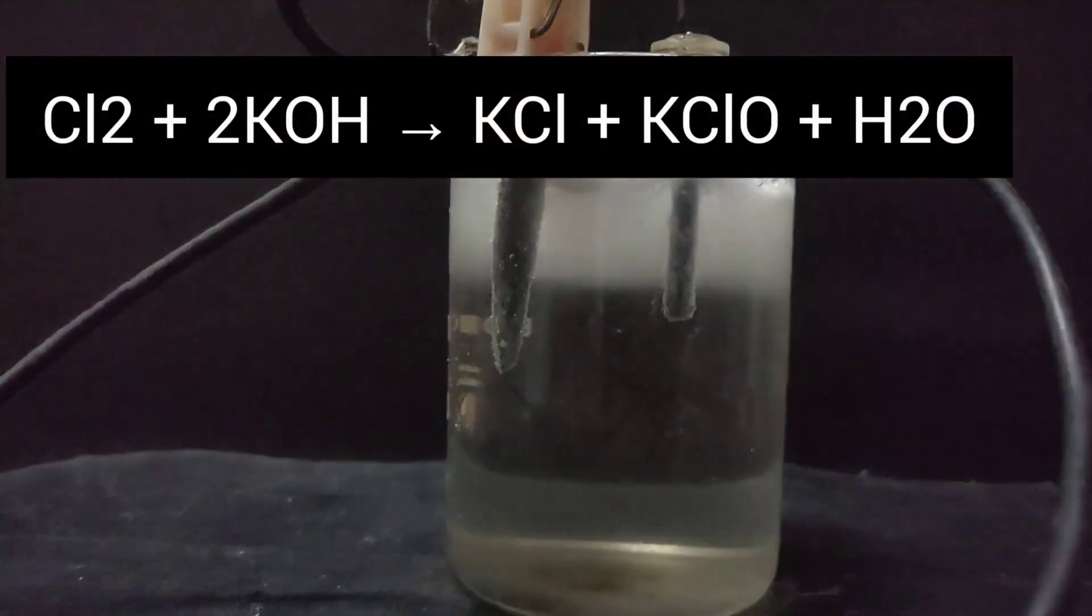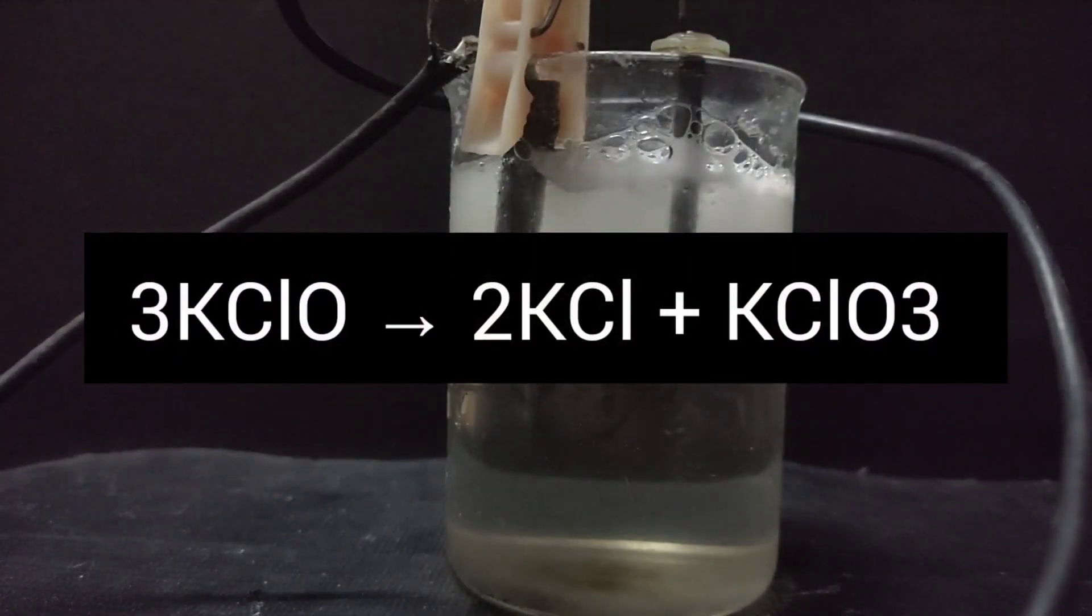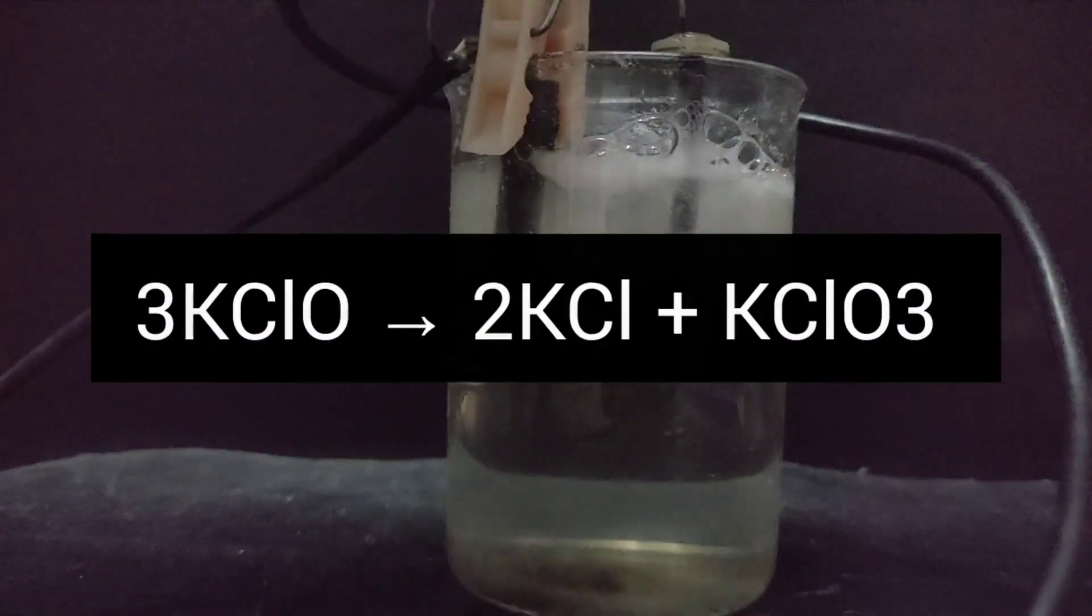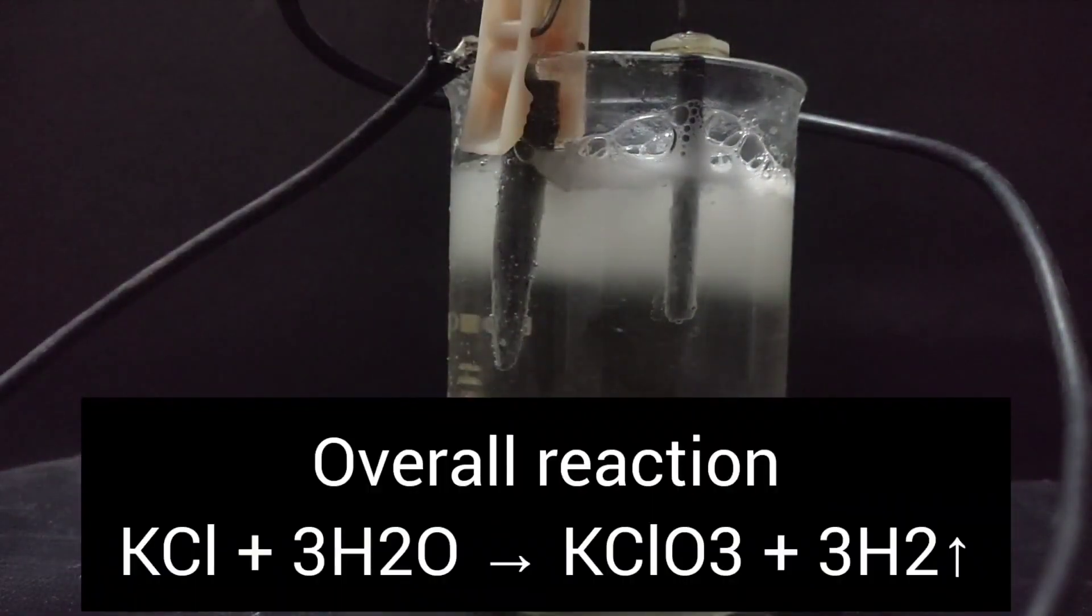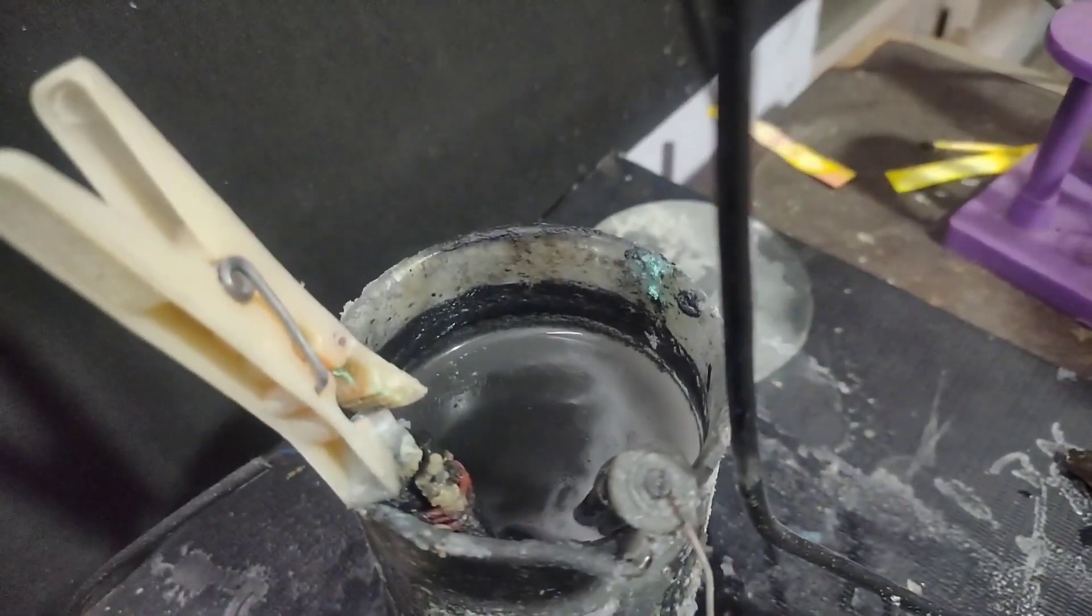The chlorine formed at the anode reacts with the potassium hydroxide in the solution, giving potassium hypochlorite. The potassium hypochlorite then disproportionates into potassium chlorate and potassium chloride. This process goes on and potassium chlorate is formed as a product which separates out from the solution due to its lower solubility in cold water and settles at the bottom.